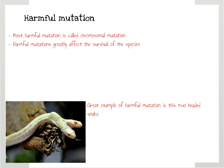An example of harmful mutation is a two-headed snake. These snakes do not live long at all. The best chance of survival for these species is to live in captivity. Two-headed snakes often get confused and might even try biting each other's heads off. This mutation greatly affects the snake's chance of survival in its own natural habitat.